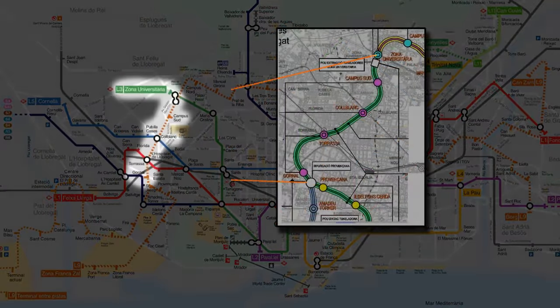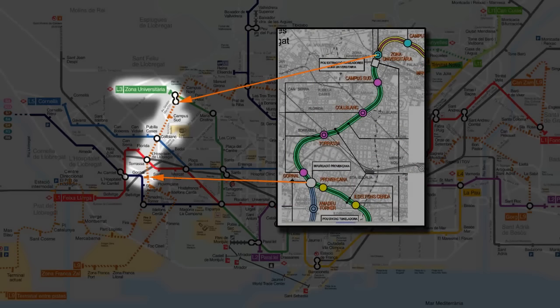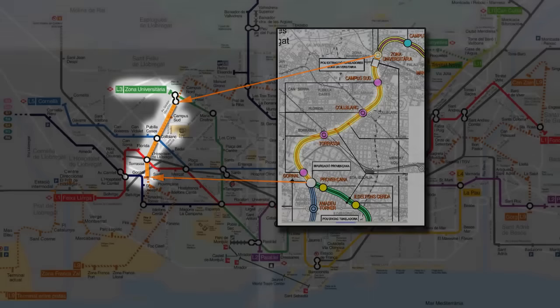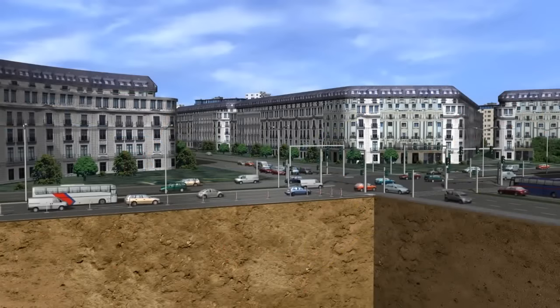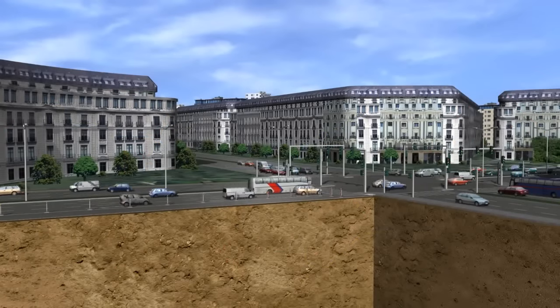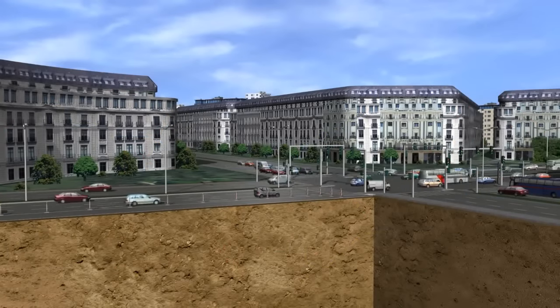As part of the extension of subway line 9, the machine S442 excavates a 3.6 km long section between the subway stations Gornal and Zona Universiteria. The tunnel route crosses beneath Barcelona's historic city centre, densely populated residential areas and roads.